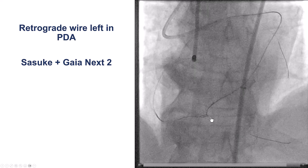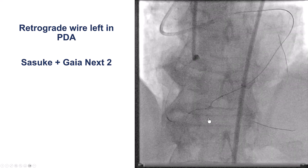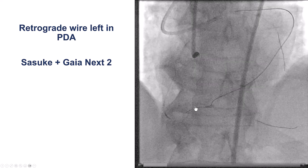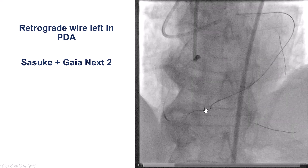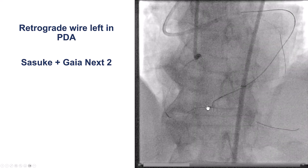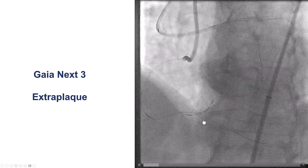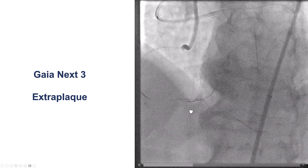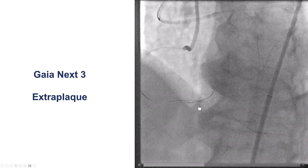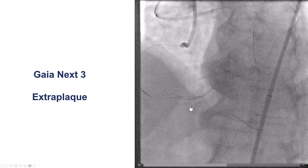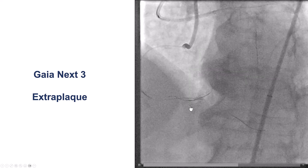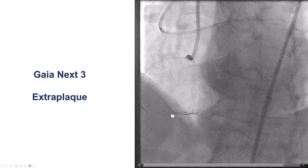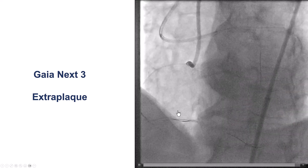Indeed, after multiple attempts, we were able to advance the guidewire retrogradely, using the antegrade knuckled wire as a marker of where the lumen was. Eventually, we were able to advance the Gaia wire into the extraplaque space, then switch it for a single-lumen microcatheter, and we were able to get to the distal right coronary artery.